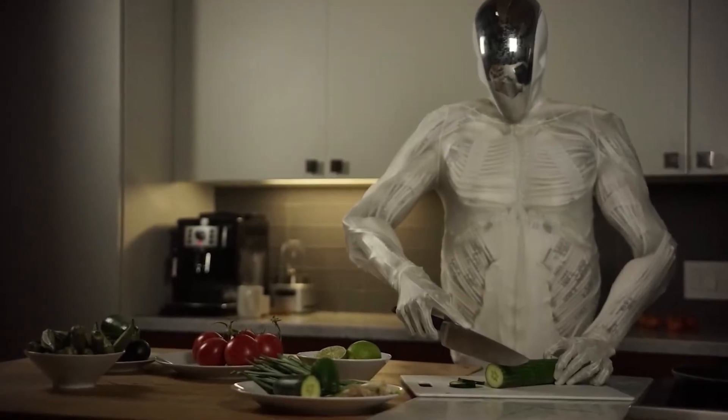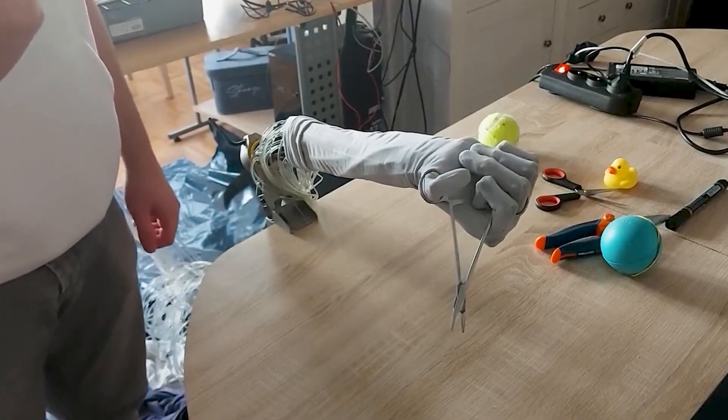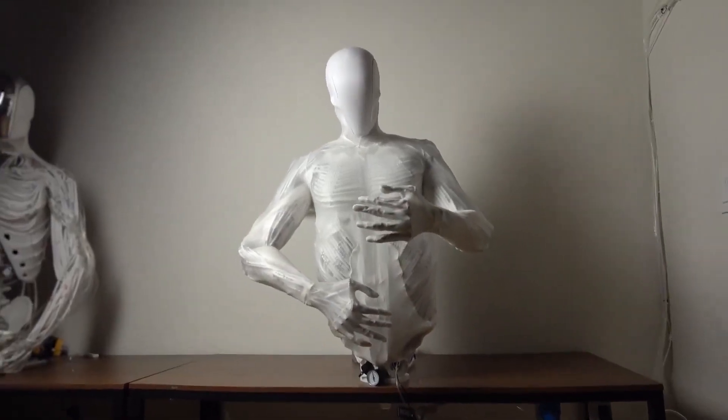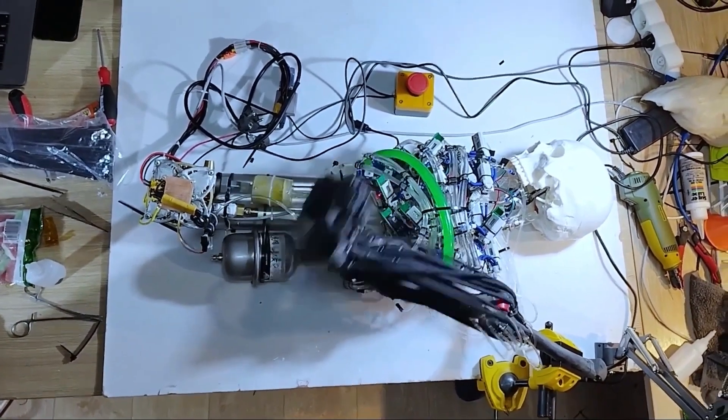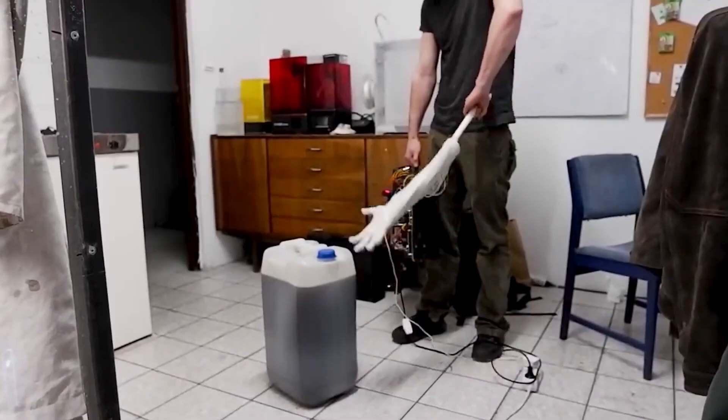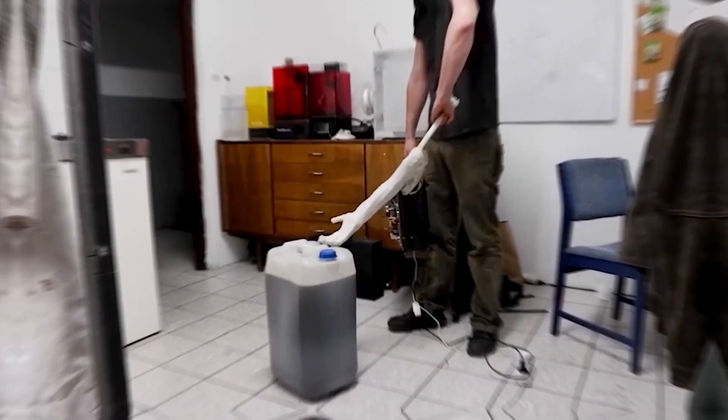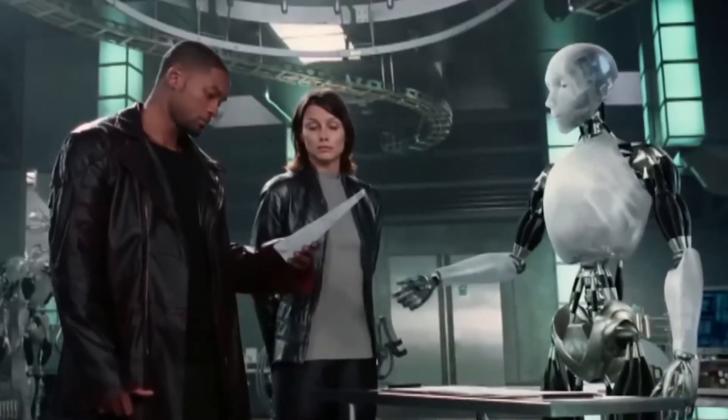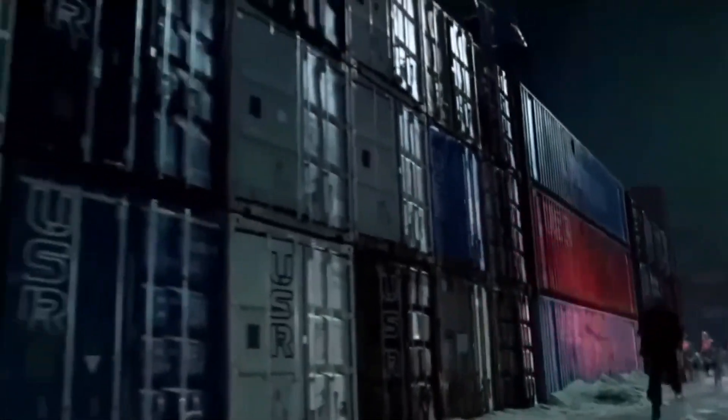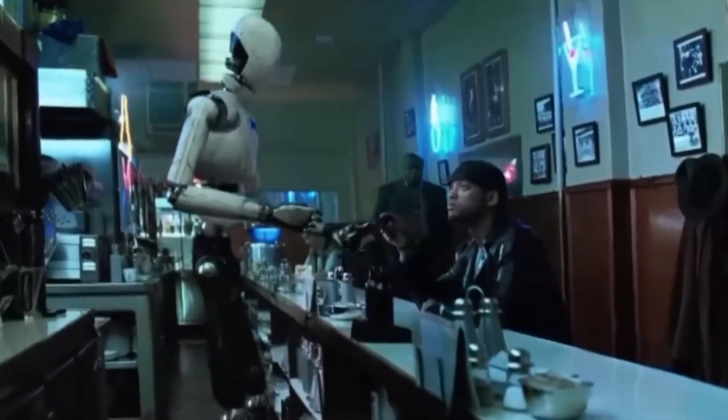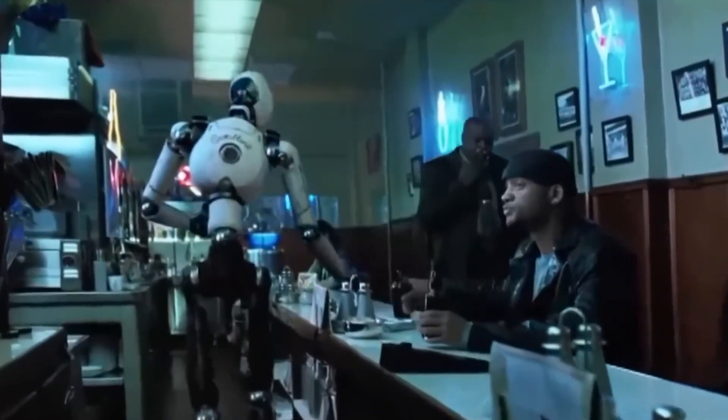First off, let me say that the ProtoClone V1 promises some incredible advancements and use cases. But then I start thinking about the implications. What happens when these advanced machines become too integrated into our lives? Are we relinquishing control over our own decisions? In iRobot, the idea of robots making choices based on their interpretation of human safety led to unintended consequences. Are we prepared for a future where a machine could prioritize logic over alignment with humans?